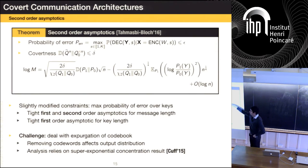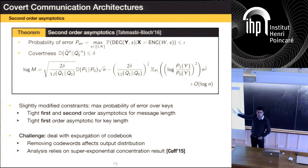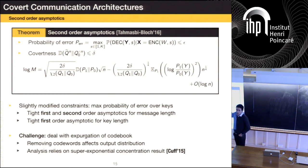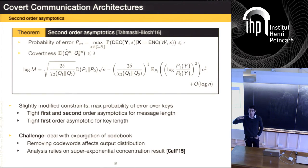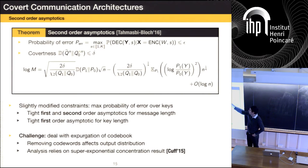We then got second-order asymptotics for the message, and they're tight. One thing I'm not claiming is that we solved the problem completely — we don't have second-order asymptotics for the key yet, and we don't know how to get them. What you would expect: the first term is √n, the second term is n^(1/4). This is actually a variance — in this weird regime, when you compute a variance as E[X²] − (E[X])², the term E[X²] is negligible compared to (E[X])², so it's still a variance to first order. We characterize that.